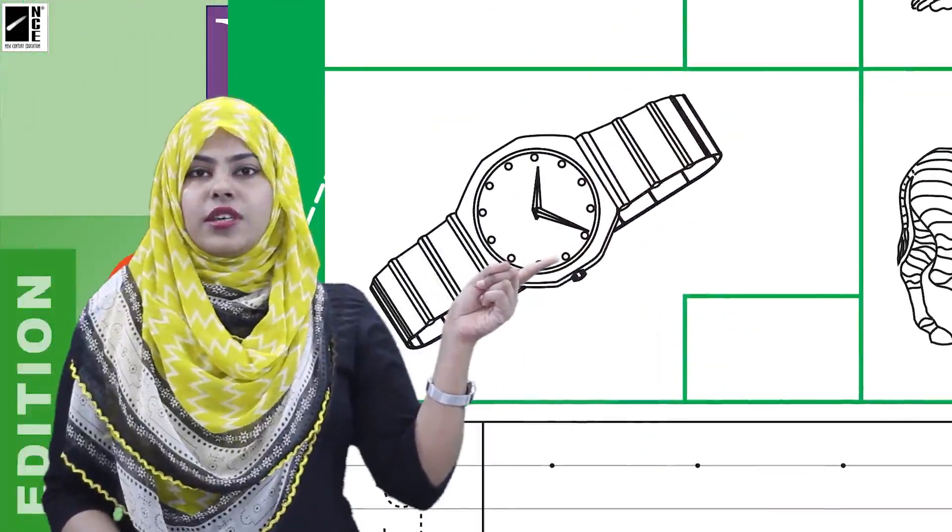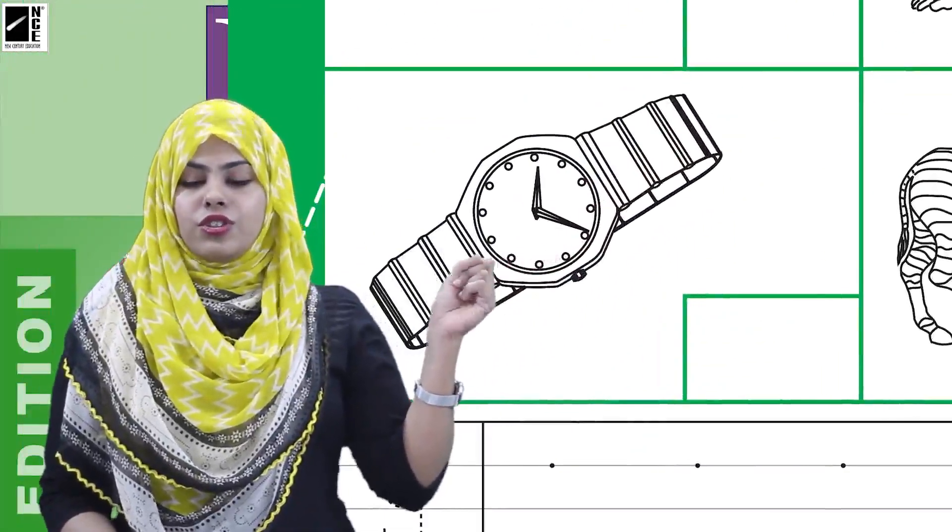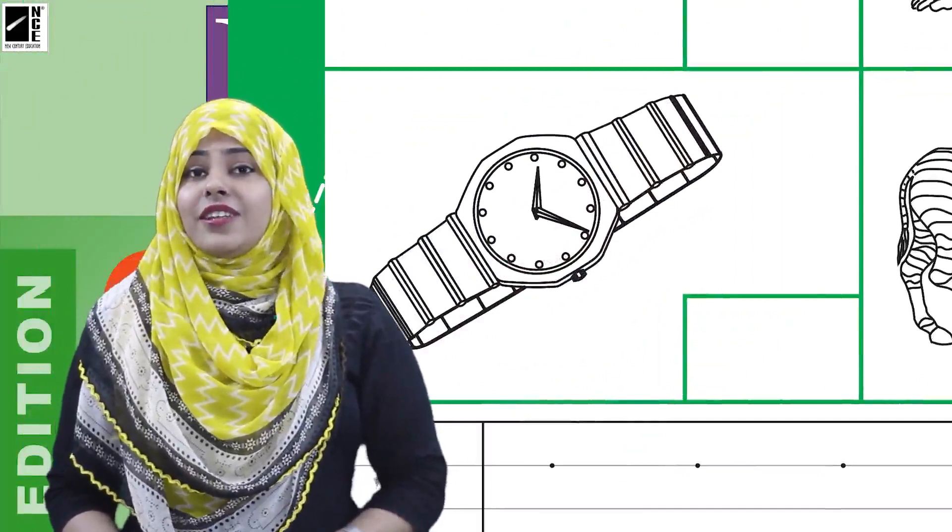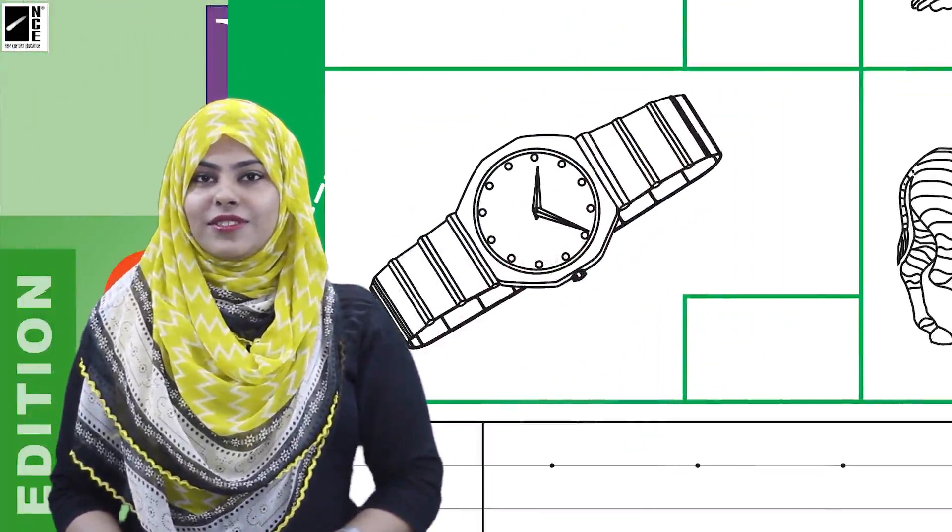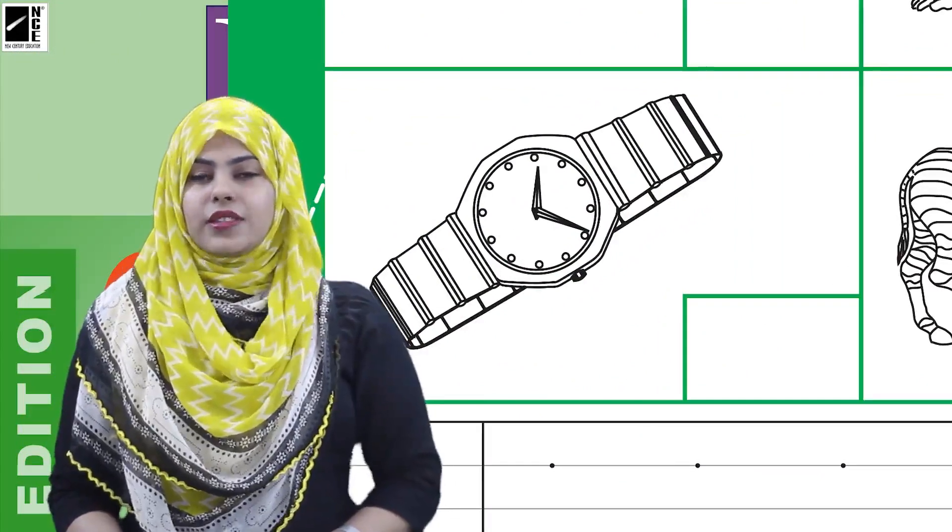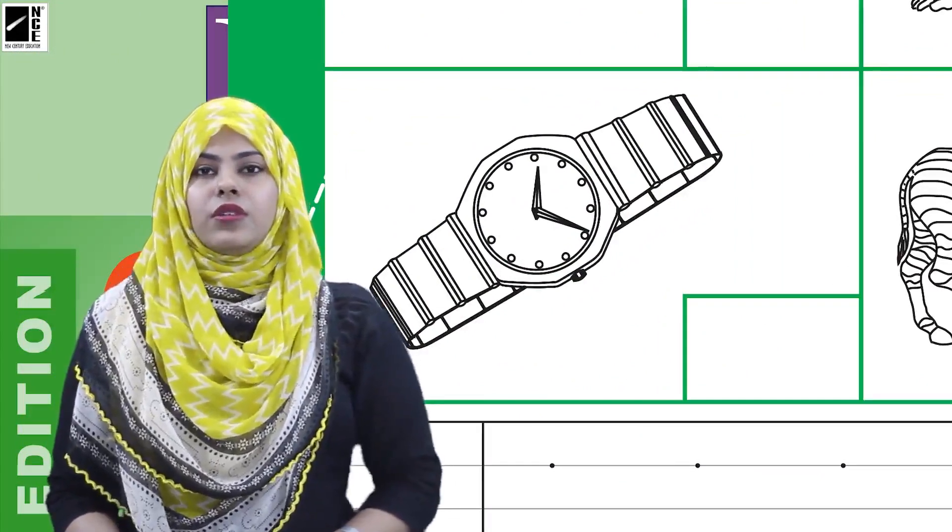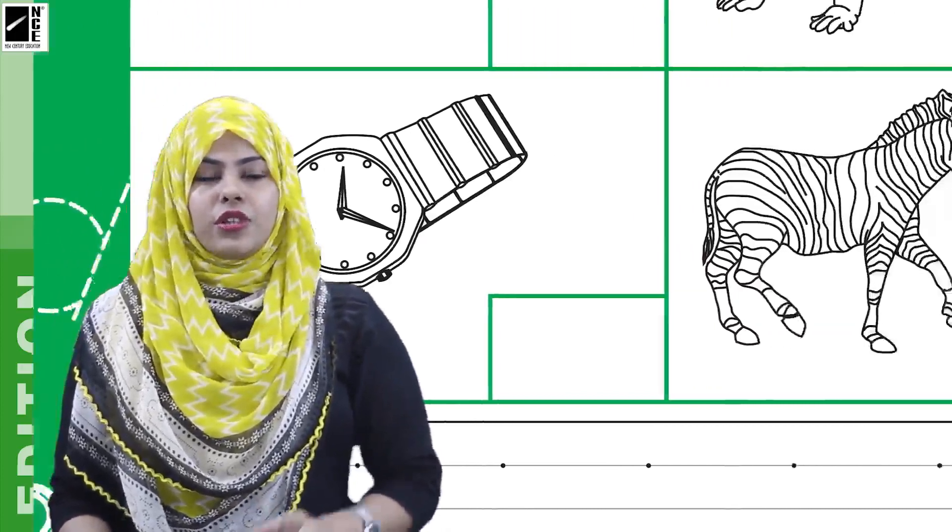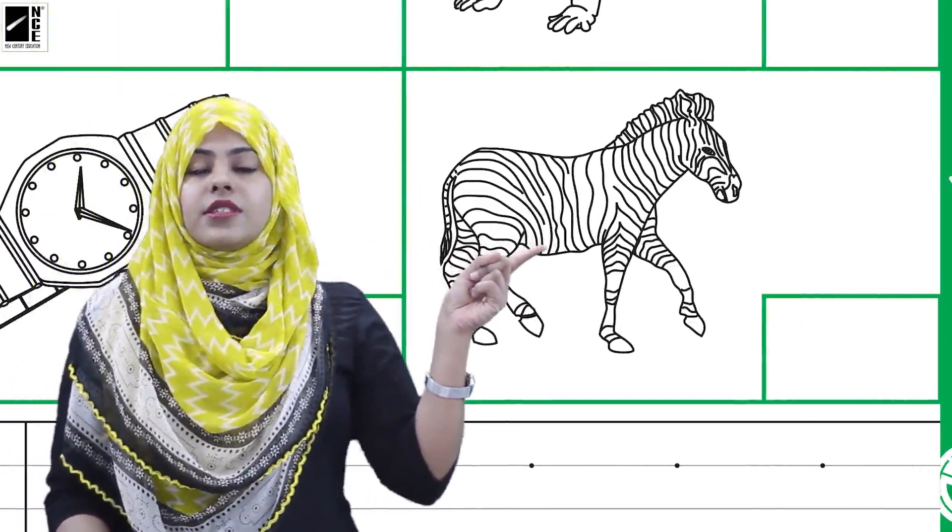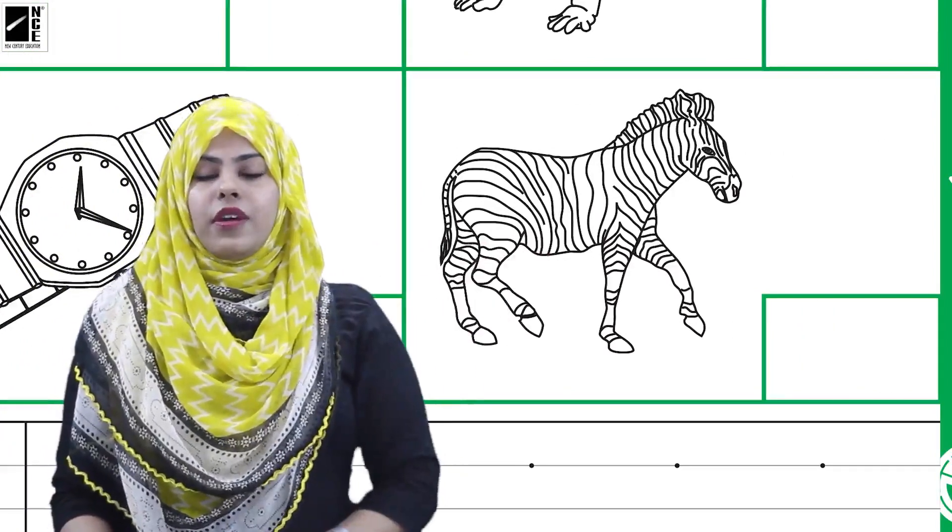to the next picture, which is a watch. You can easily tell me the beginning sound of watch. What's the beginning sound? Yes, the beginning sound of watch is 'w', 'w', watch. Now move on to the last picture, which is zebra. Can